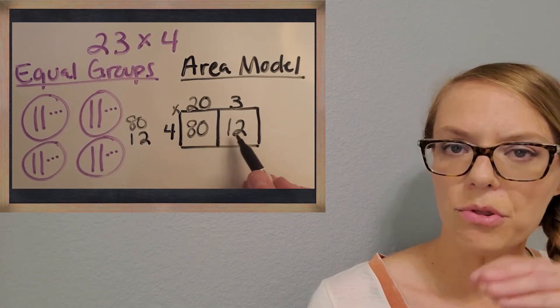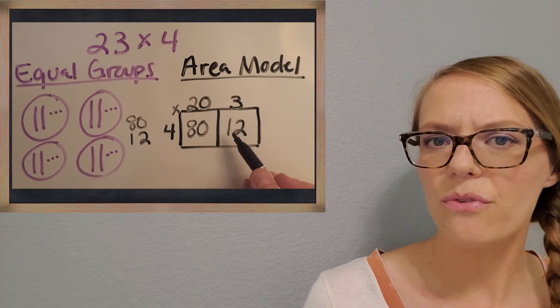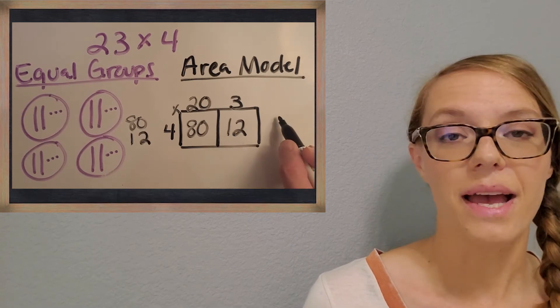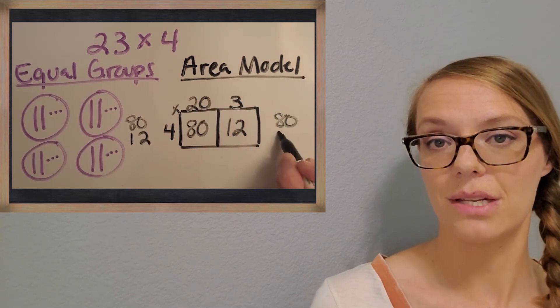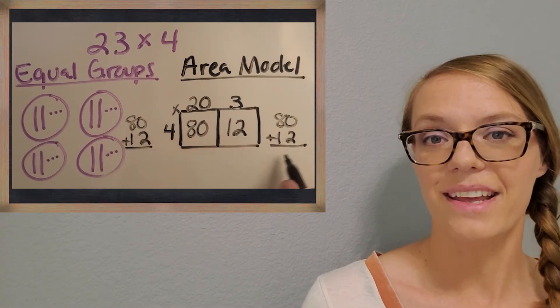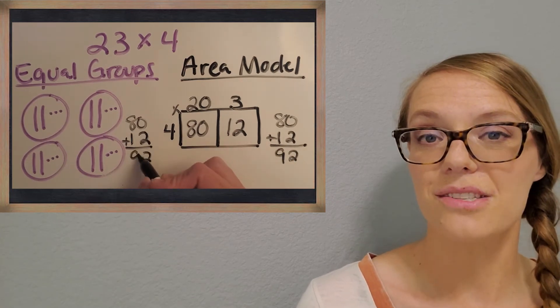Awesome. Adding just like the other strategies. So we're going to do 80 plus 12. And you got it. It's 92. So we get the same answer on both strategies. Great job.